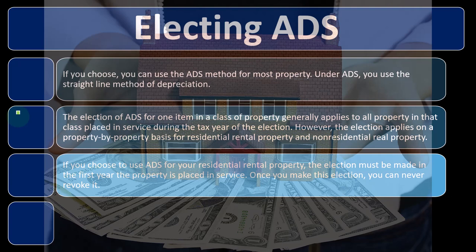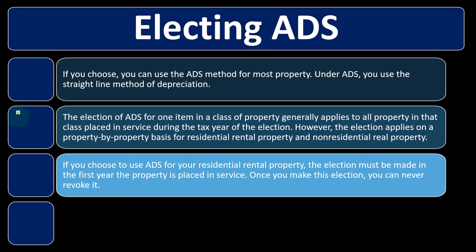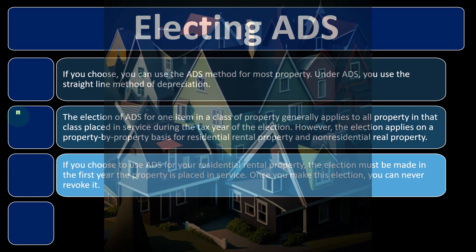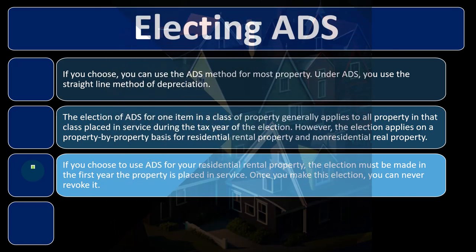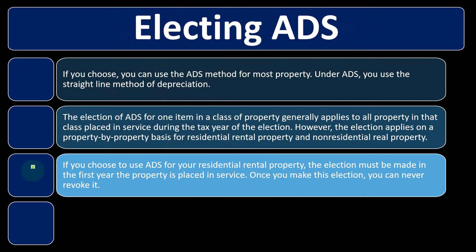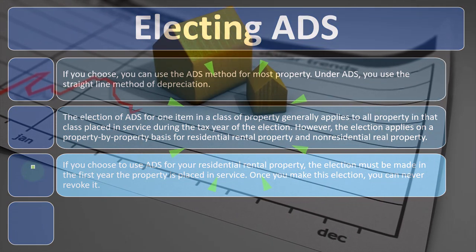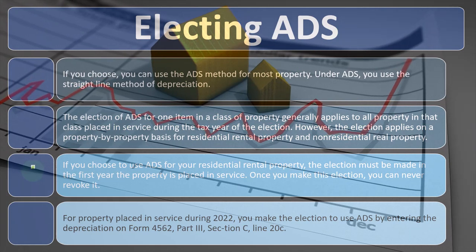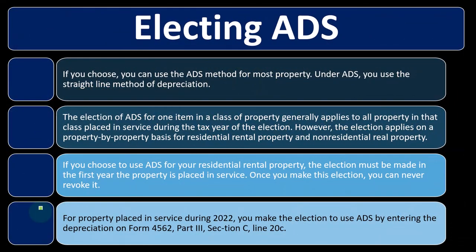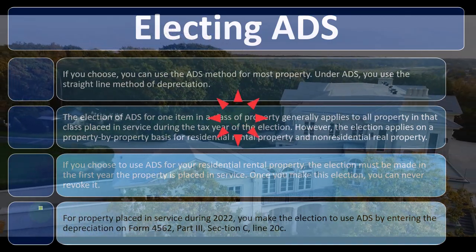The election of ADS for one item in a class of property generally applies to all property in that class placed in service during the tax year of the election. However, for residential rental property and non-residential rental property, the election applies on a property-by-property basis. If you choose ADS for your residential rental property, the election must be made in the first year the property is placed in service, and once made, it can never be revoked. For 2022, you make the election on Form 4562, Part III, Section C, line 20c.